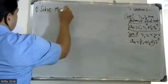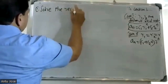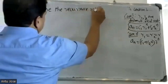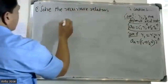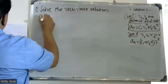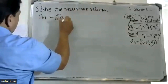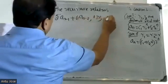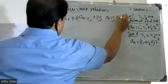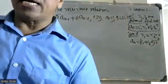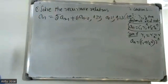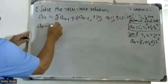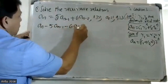Now let us solve the recurrence relation: aₙ = 5·aₙ₋₁ + 6·aₙ₋₂, for n greater than or equal to 2, with initial conditions a₀ = 1 and a₁ = 3. This is a second order homogeneous recurrence relation. Rewriting: aₙ − 5·aₙ₋₁ − 6·aₙ₋₂ = 0.